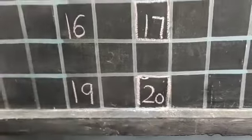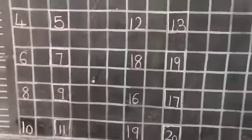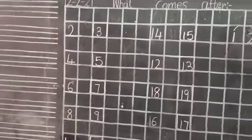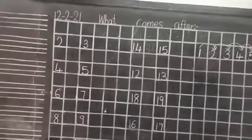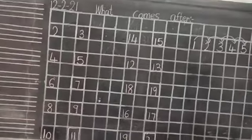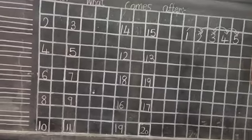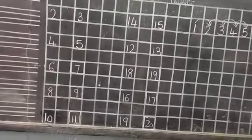So count the numbers then write it. Okay children? In this way you are going to do it in your classbook. Write down the date 12-2-21 and write the heading: what comes after. Okay children?